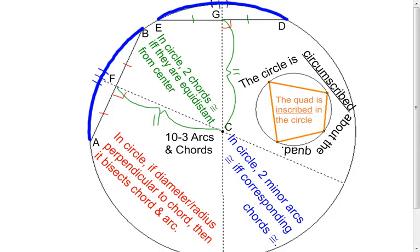And then the last thing to put in your circle book is a little piece of vocab, the word circumscribed. So in this case, the circle is circumscribed about the quadrilateral. And I know I didn't give you a formal definition.